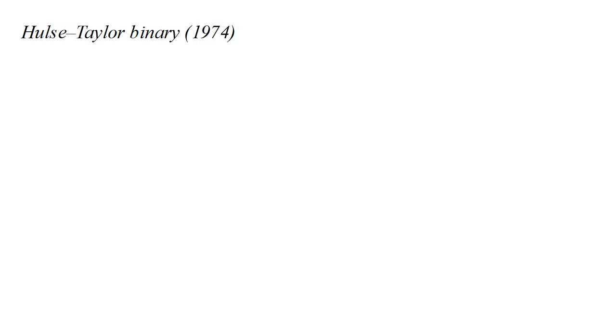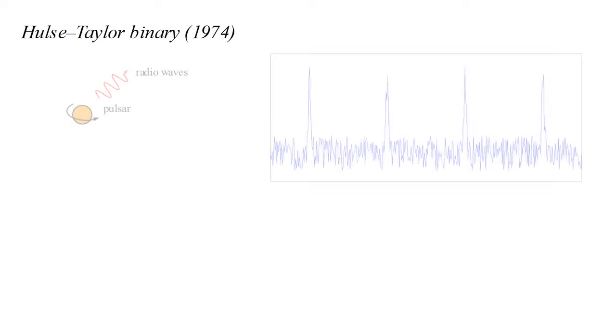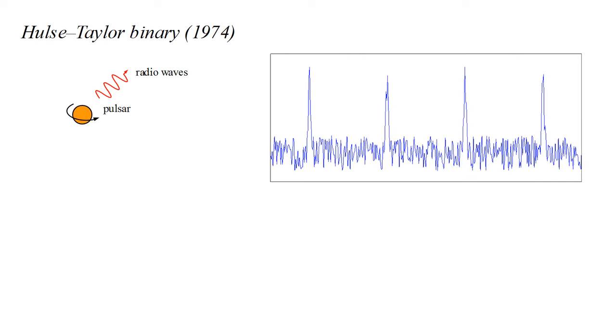In 1974, Hulse and Taylor observed the first compelling evidence for gravitational waves. They discovered a new pulsar, a rapidly rotating neutron star whose large magnetic field focuses a beam of electromagnetic radiation. The periodic sweeping of that beam past Earth generates a sequence of radiopulses. They notice something unusual about this pulse sequence.